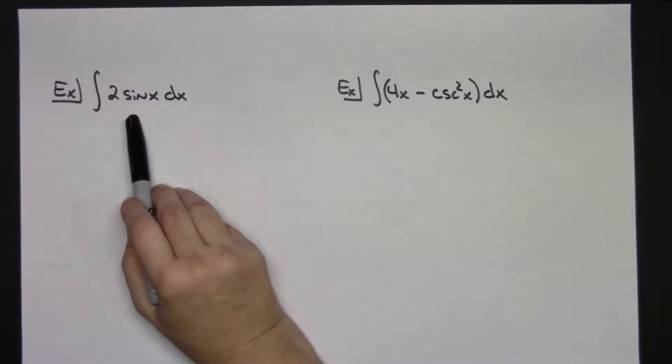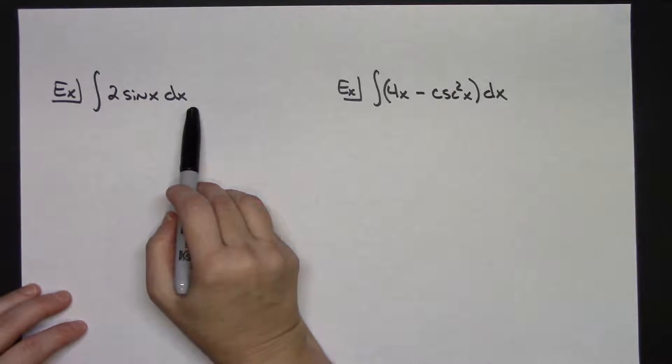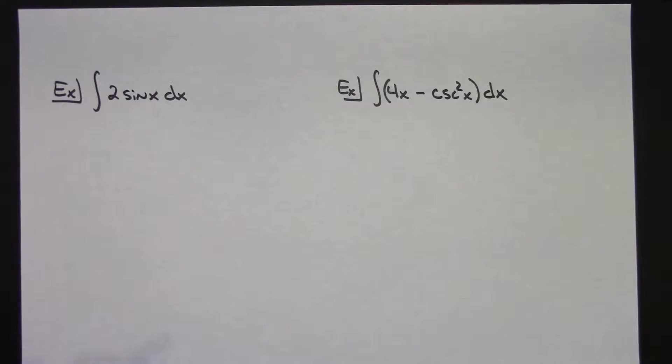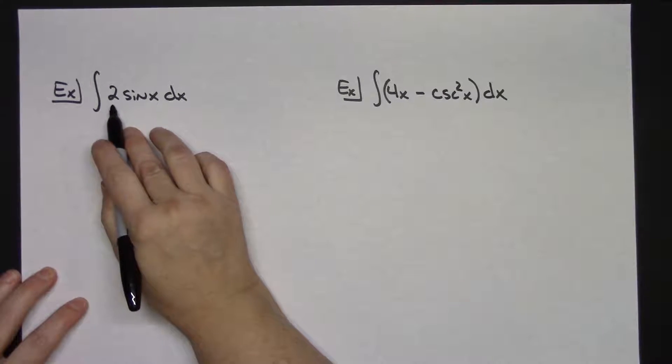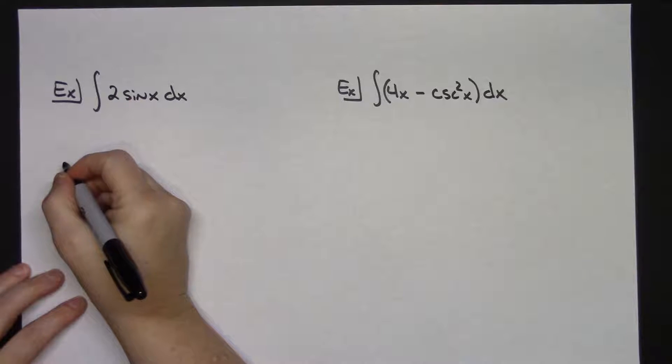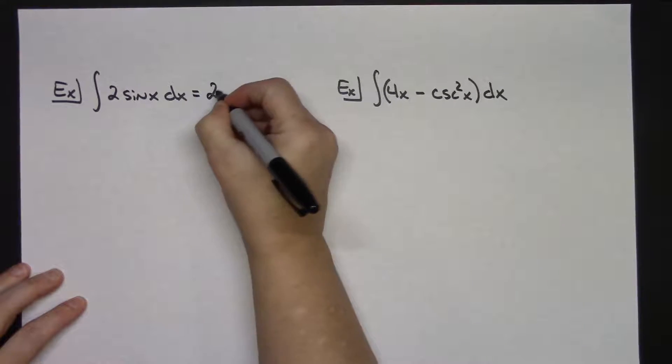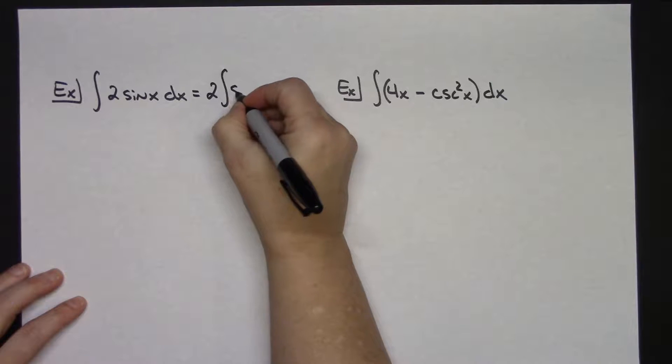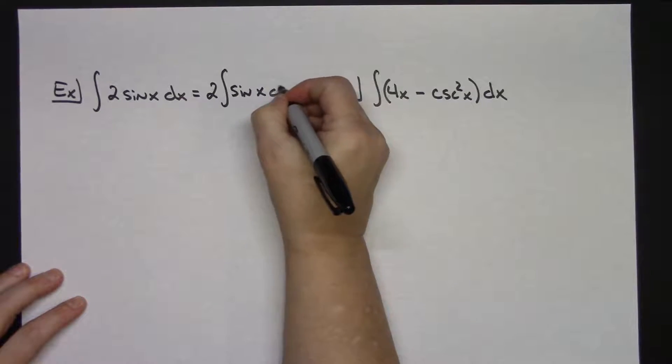Let's say for this first example here, I'm going to integrate 2 sine x dx. We have a rule that says if there's a constant in front of my function, then I can pull it out in front. So that's the first thing that I'm going to do - I'm going to pull that 2 out in front and then integrate my sine x dx.